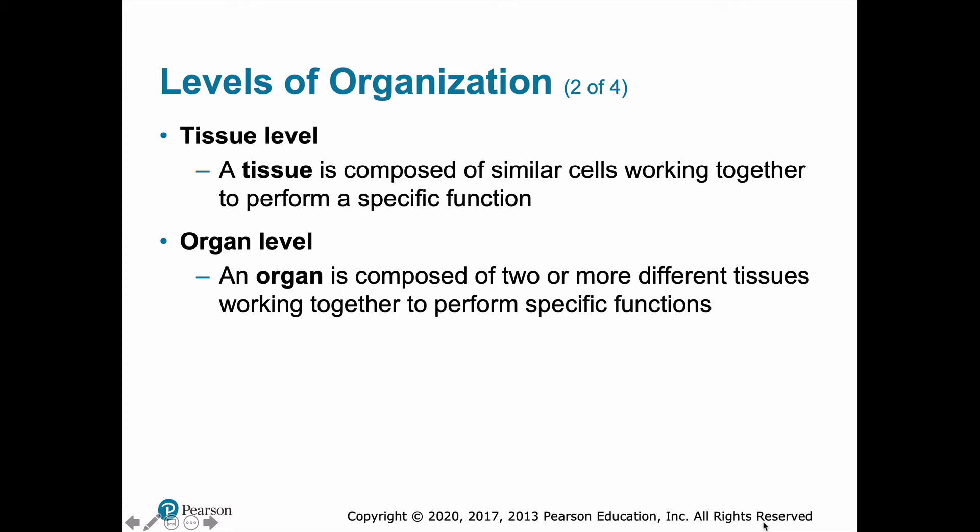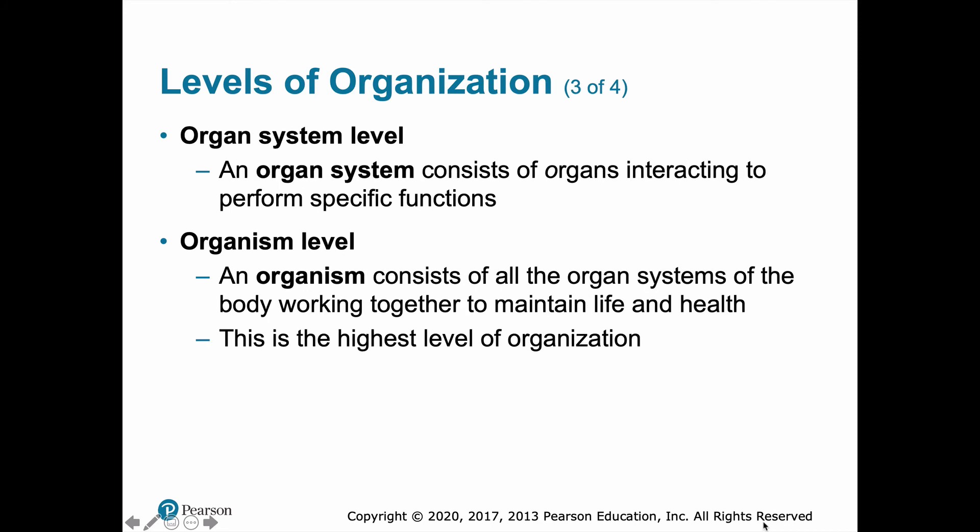Even something like your small intestines — if you look at the different layers of it — we find all four tissue types found in the human body, which include epithelial tissue, nerve tissue, muscle tissue, and connective tissue. So there are four tissue types, but all organs are made of two or more different tissue types working together. Organs can function more closely interconnected with other organs to make up a system.